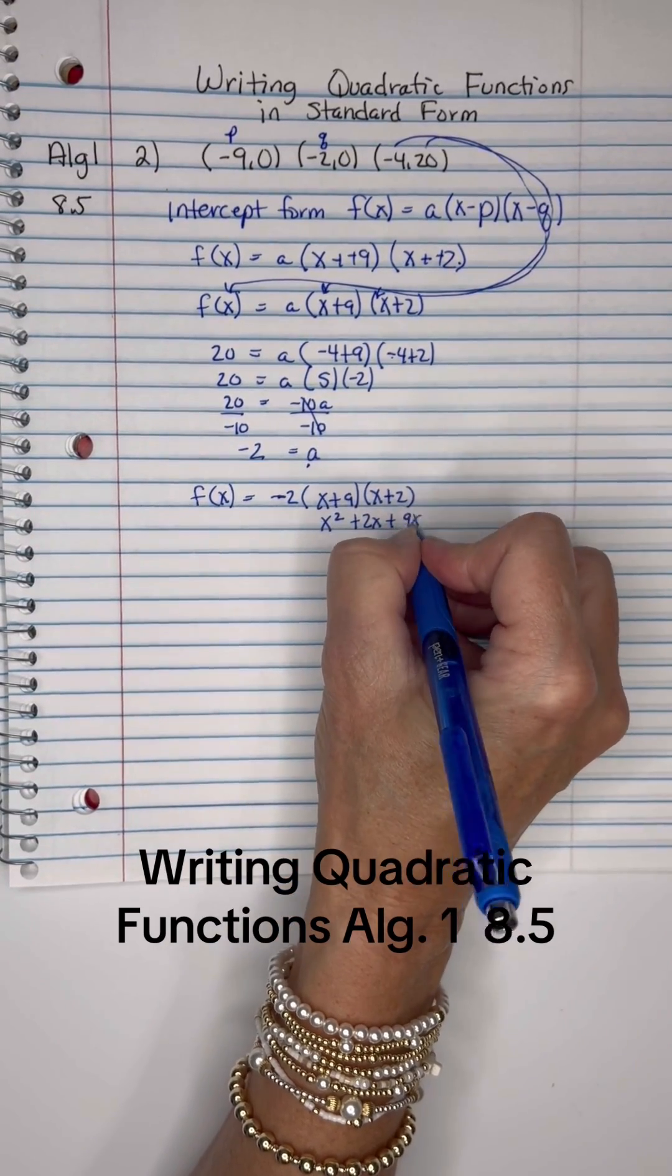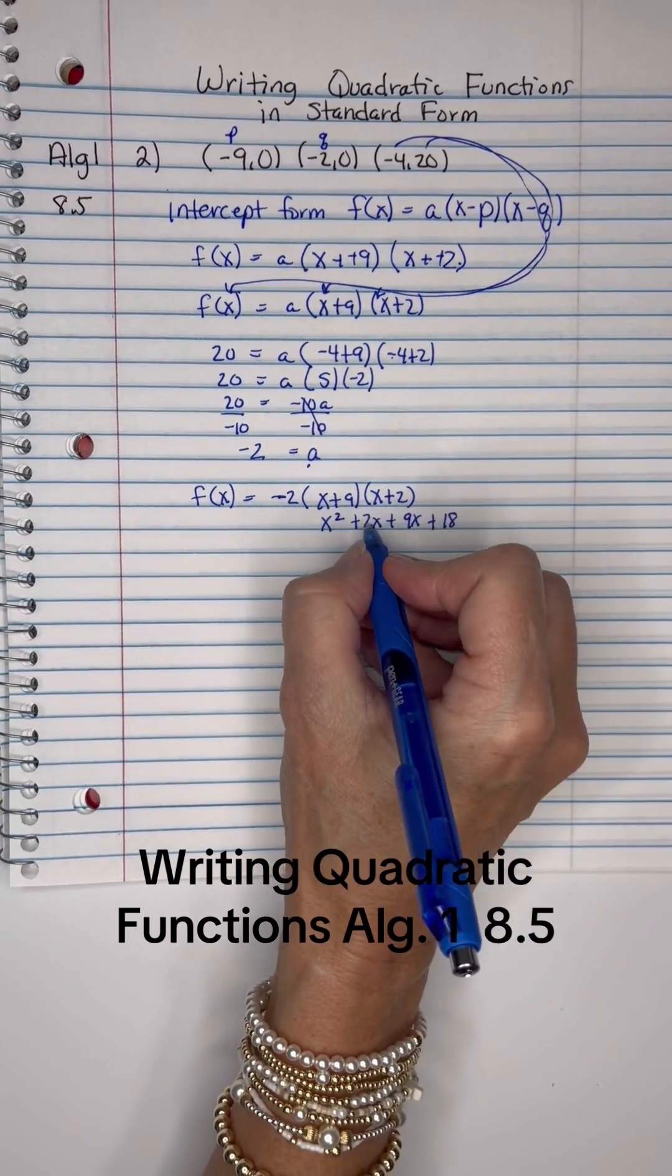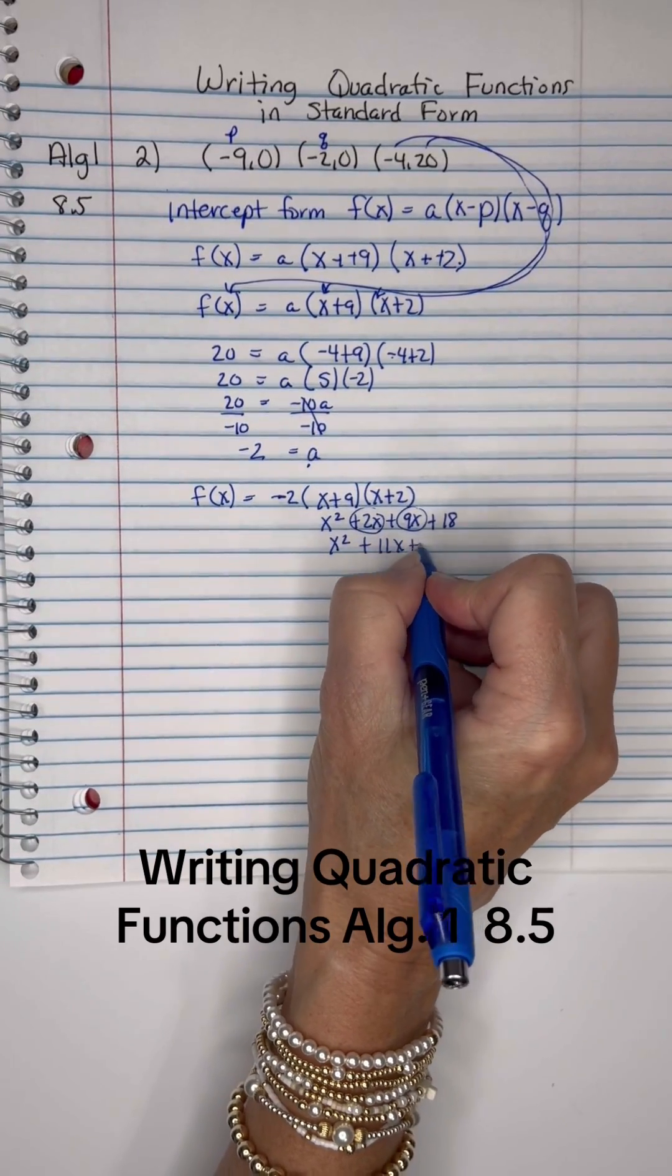9 times x is 9x, and 9 times 2 is 18, so x squared plus 11x plus 18.